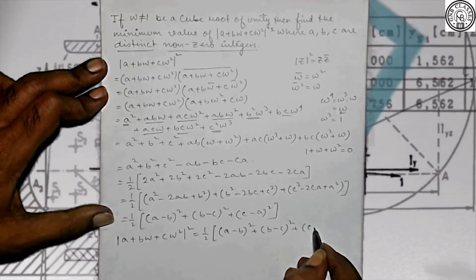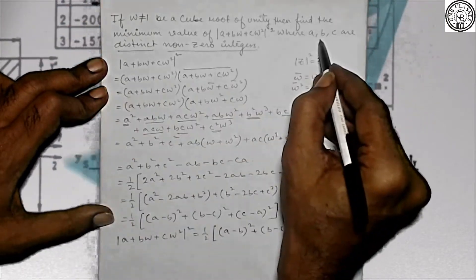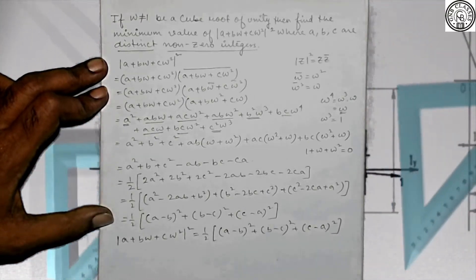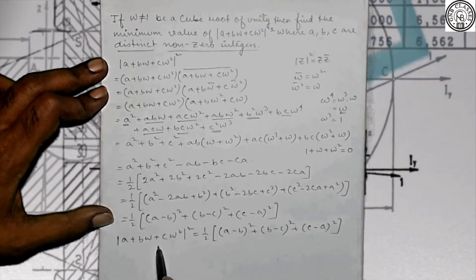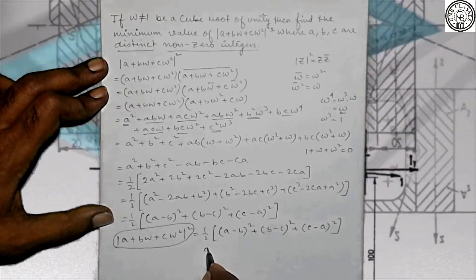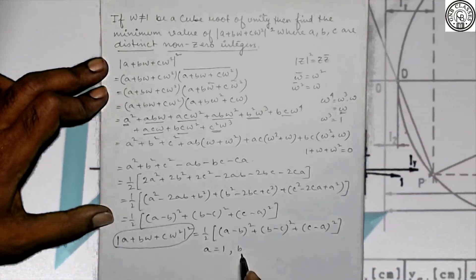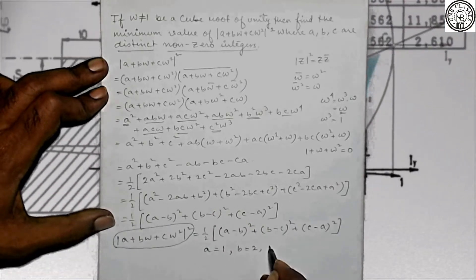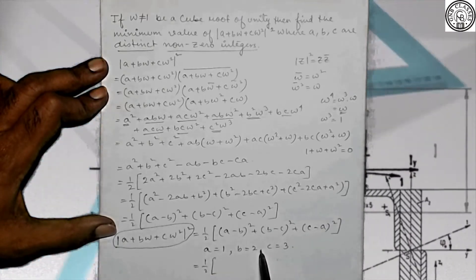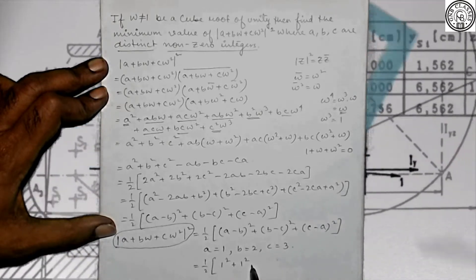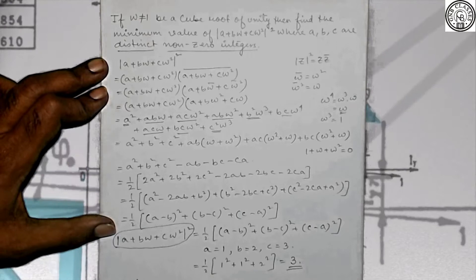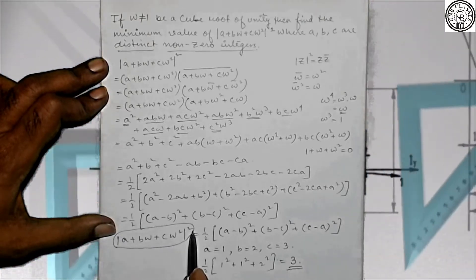Since a, b, c are distinct non-zero integers, to minimize this expression we assign minimum values: a=1, b=2, c=3 (all distinct, non-zero integers). Then (a-b)² + (b-c)² + (c-a)² = 1 + 1 + 4 = 6, giving ½ × 6 = 3. Therefore the minimum value of |a + bω + cω²|² is 3.